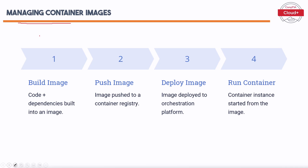Managing container images involves several key steps. First, Build Image — code and dependencies are built into the image, ensuring the container includes everything needed. Second, Push Image — the image is pushed to a container registry, making it available for deployment. Third, Deploy Image — the image is deployed to an orchestration platform like Kubernetes. Fourth, Run Container — a container instance is started from the image, executing the application in a consistent containerized environment.